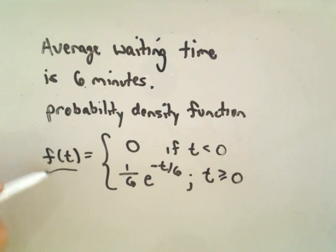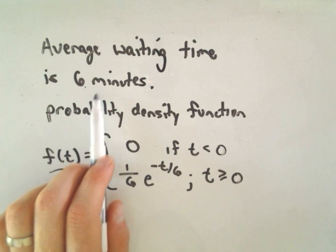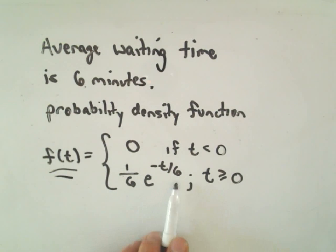So this is the probability density function that will model this situation. Again, I'm not justifying that at all. One thing that is important is if you know the average waiting time, those values basically get used in your formula. It's going to turn out. But again, a different story.